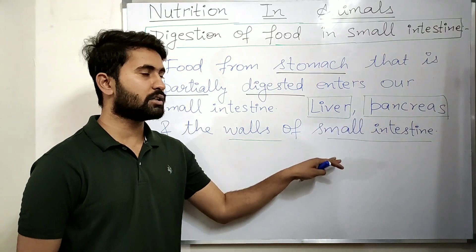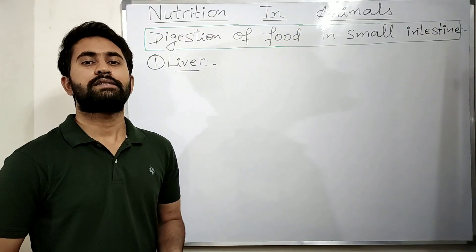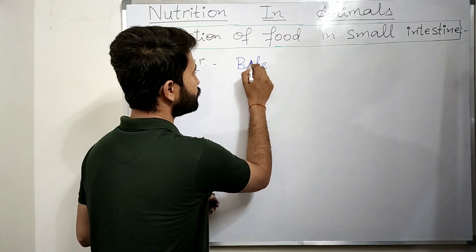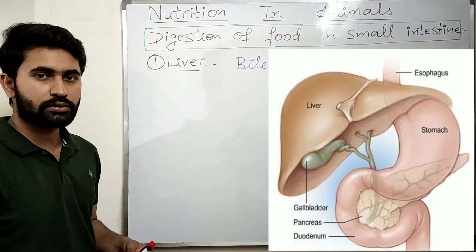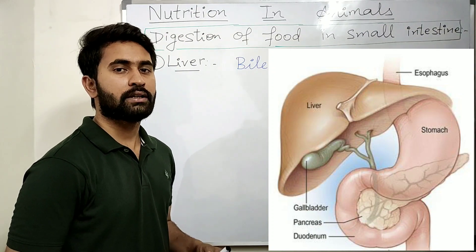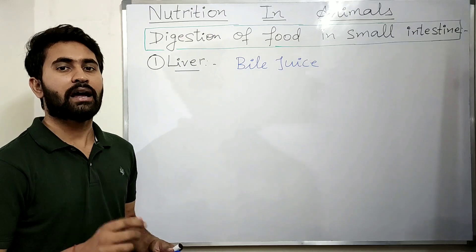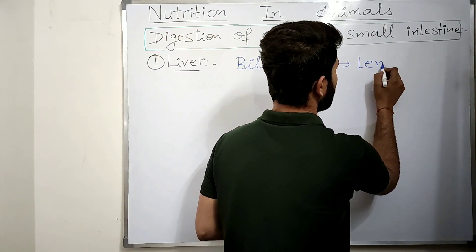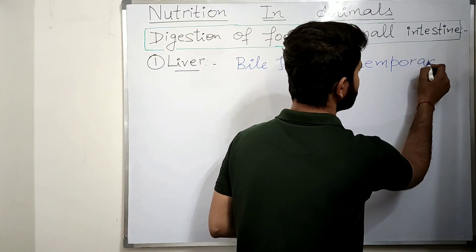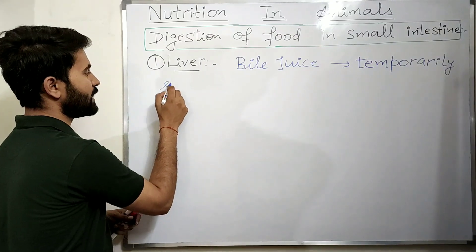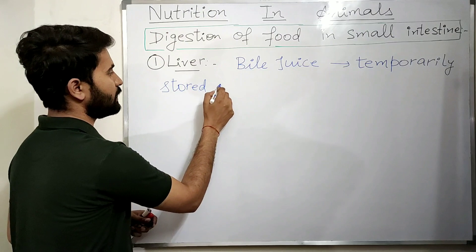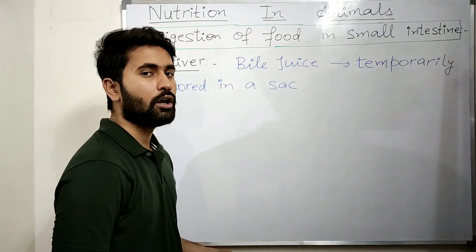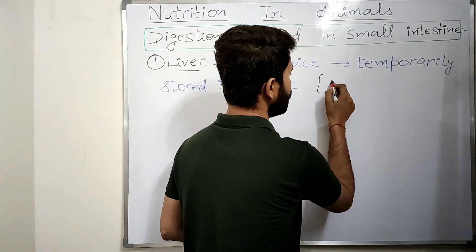The liver secretes bile juice, and this bile juice is temporarily stored in a sack called the gallbladder. So the bile juice is produced by the liver and temporarily stored in the gallbladder.